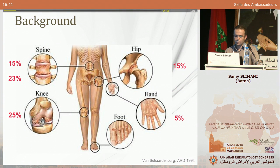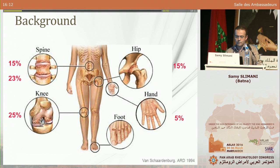You are all familiar with the relative frequencies of different sites involved in osteoarthritis. Hip osteoarthritis occupies the third or fourth place among the most prevalent sites of osteoarthritis. However, it's not always the same values that we find according to ethnicity. We know that in Asian and African populations, this distribution is not necessarily the true one.